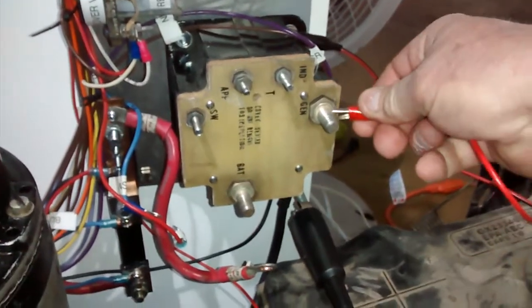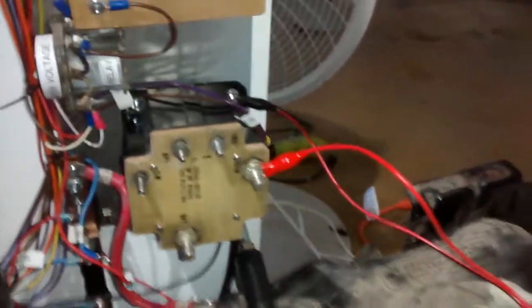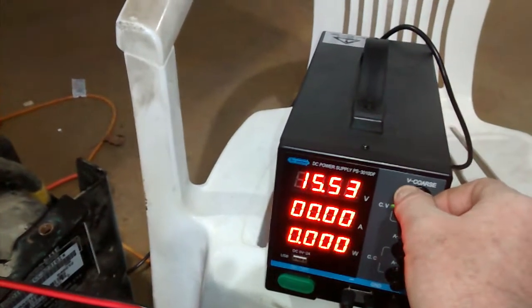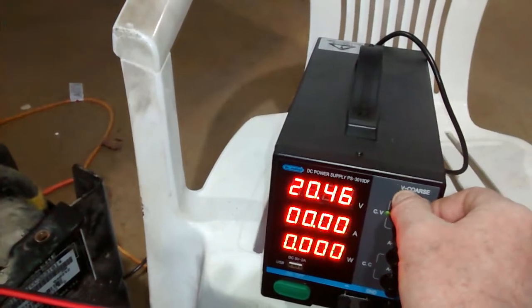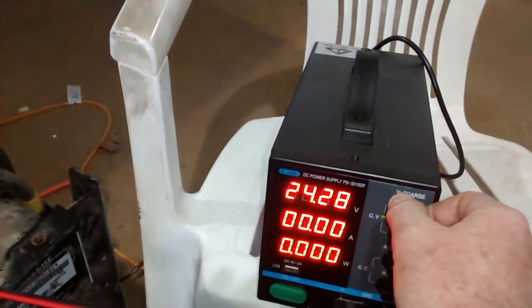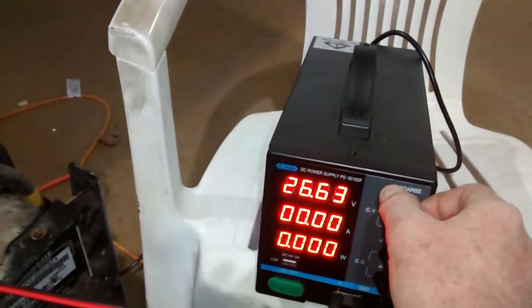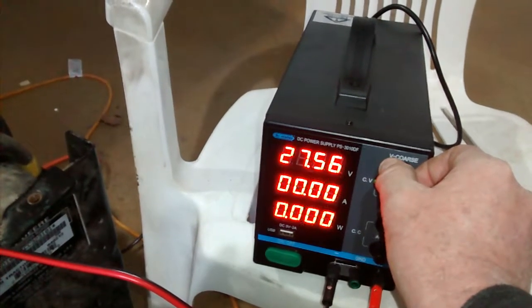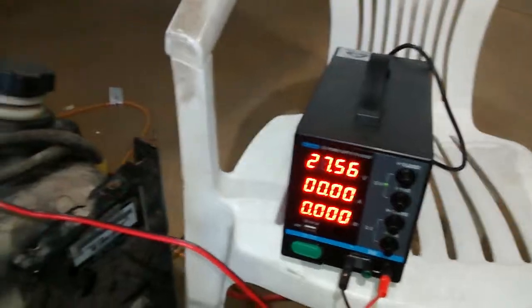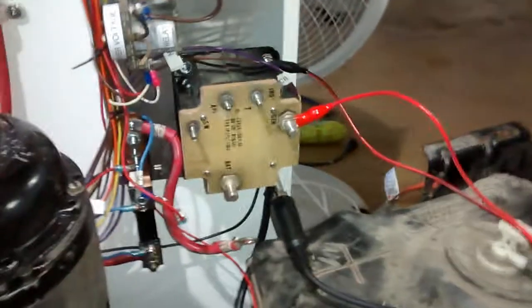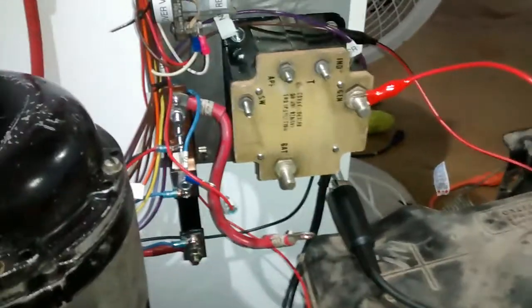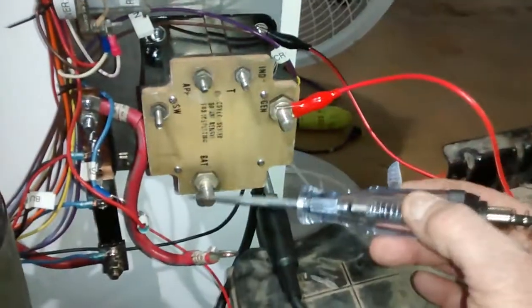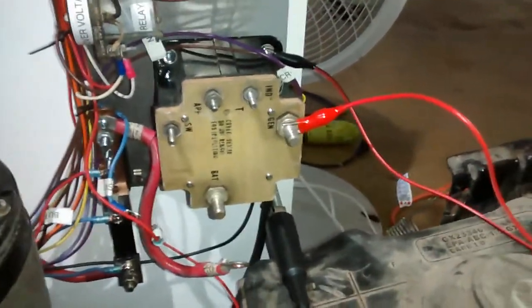So we'll hook the power supply up to the generator terminal. We're going to run our voltage up to 27 volts or thereabouts. 27.7 is the goal, but it doesn't have to be exact. All right, so there's 27.5 volts and we have that going to the reverse current contactor, and notice there's no voltage indicated at the battery terminal. That's because the relay is still open.